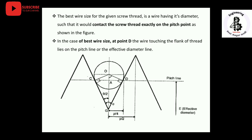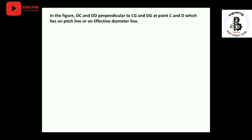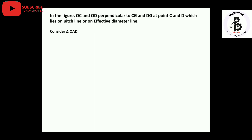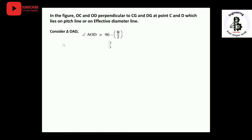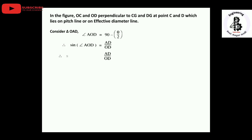Using this relationship, we would like to derive the relations for the best wire size. Concentrating on the figure, OC and OD are perpendicular to CG and DG at points C and T, which lie onto the pitch line or the effective diameter. Now considering triangle OAD, the angle AOD should be equal to 90 minus θ/2. Applying sine: sine(AOD) = AD / OD, so sine(90 - θ/2) = AD / OD.